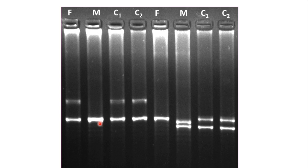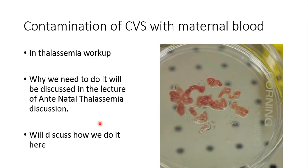Now regarding contamination of chorionic villi samples with maternal blood: this is usually done during thalassemia workup or any prenatal workup for genetic disorders. The chorionic villi are collected from the mother, and there are chances that during this process some maternal blood may be present. If adequate care is not taken to separate maternal blood from the chorionic villi, the DNA present in the WBCs of the maternal blood would also get extracted, giving confounding and difficult-to-interpret results.